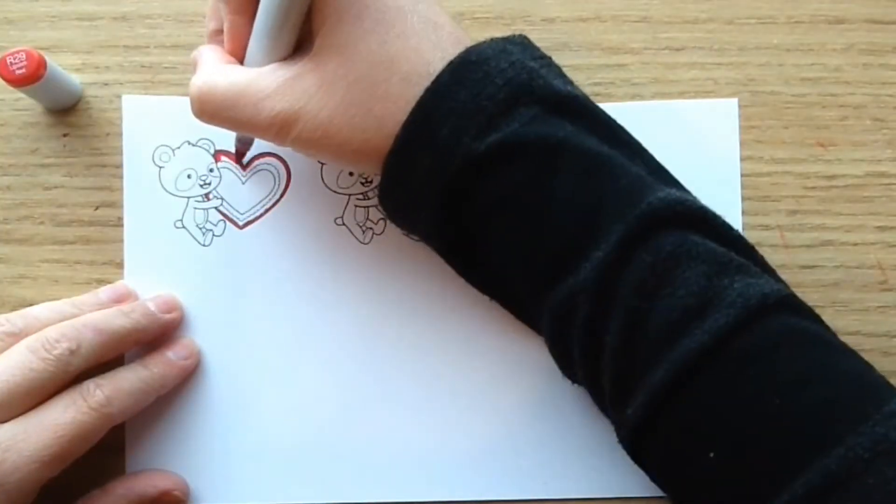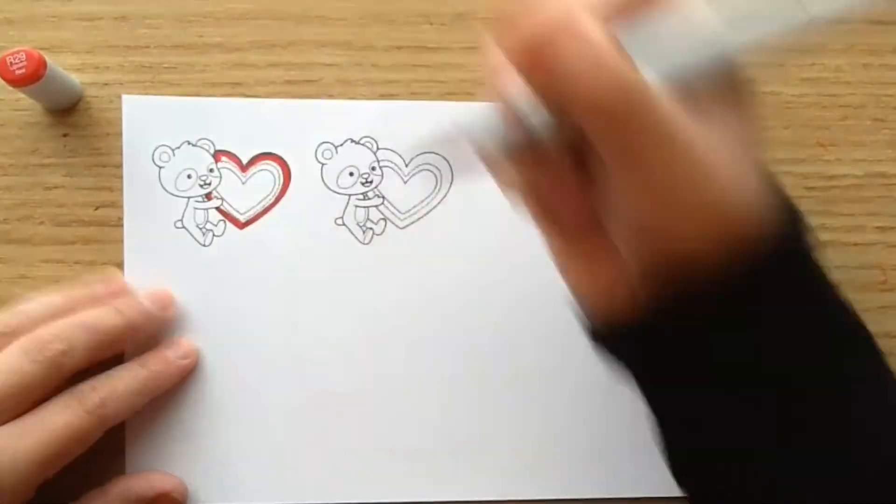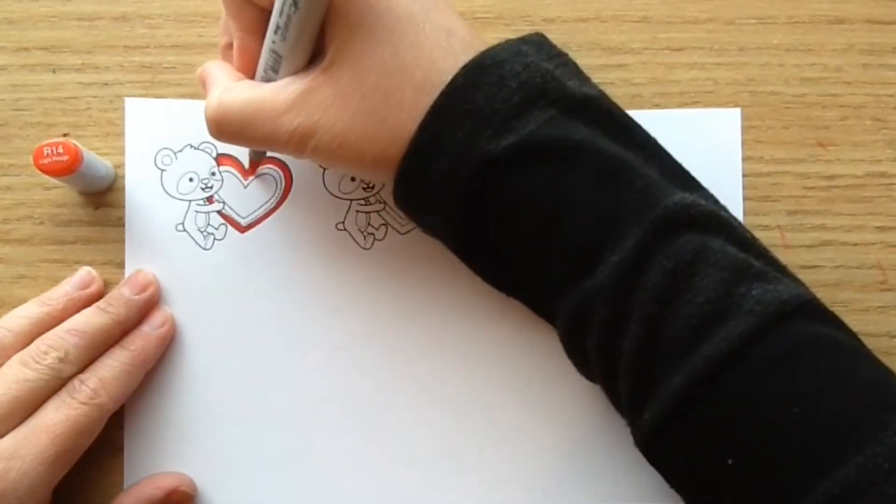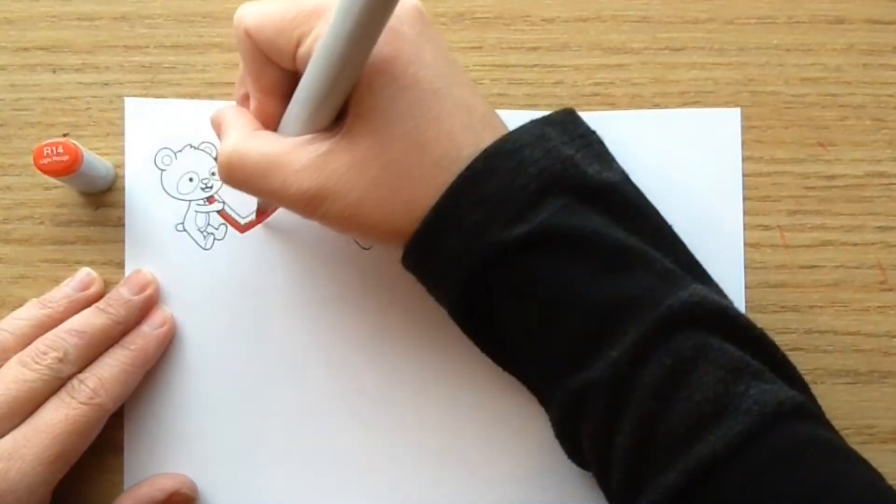Then I'm going to go in with my medium red color which is going to be R29 and I'm just blending that out. And just be careful of the middle part there because I want to leave that white so it kind of has like a little doily effect. And so I just am now taking R14 and very carefully going around there.